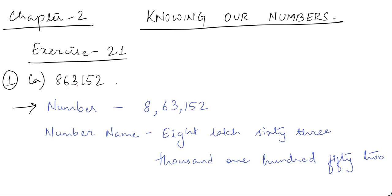Hello everyone, this video is for the students of class 6. In this video we are going to start chapter 2, that is 'Knowing Our Numbers'. Let us start with exercise 2.1. The first question is: write the following numbers according to the Indian place value chart and insert commas to separate the periods. In the Indian place value chart we have four periods: ones, hundreds, lakhs, and crores. We always start putting commas from the back — we count three digits first and put a comma, finishing the ones period.